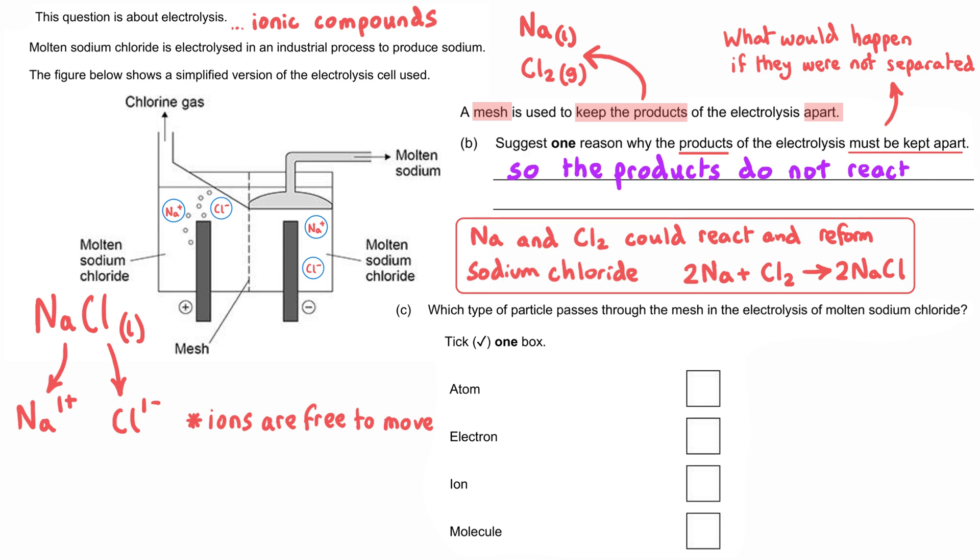Which type of particle passes through the mesh in the electrolysis of molten sodium chloride? We know that the molten sodium can't be passing through the mesh, because the mesh is keeping the products separated. So atoms can't pass through the mesh. Similarly, the chlorine gas, which is molecules, can't be passing through the mesh either. We can rule out molecules.